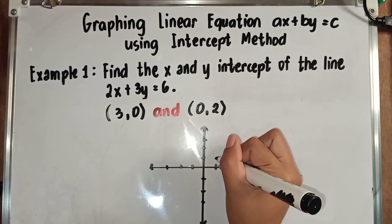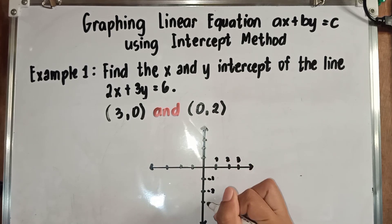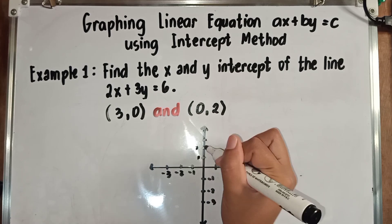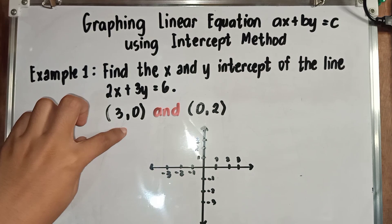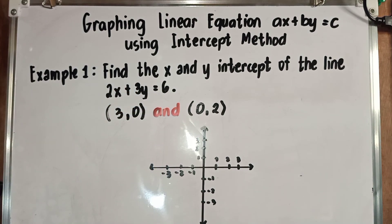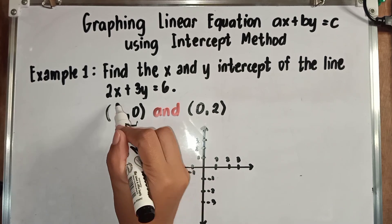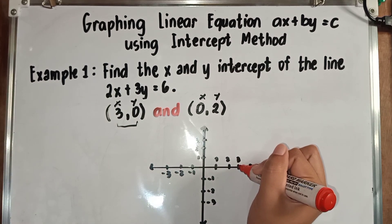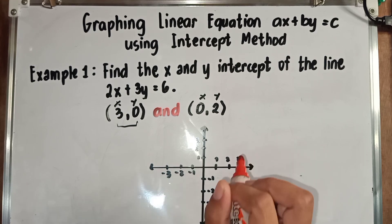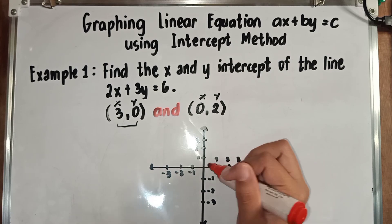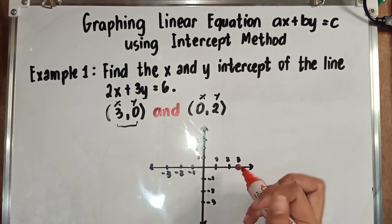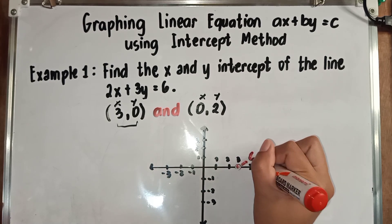We will label it by numbers: 1, 2, 3 on the positive side and negative 1, negative 2, negative 3 on the negative sides of both axes. Now let's start plotting. Starting with (3, 0): our X is positive 3 and Y is 0, meaning we don't move up or down — we stay right on X at 3. Since Y is 0, we remain at 3 on the x-axis. This is the ordered pair (3, 0).